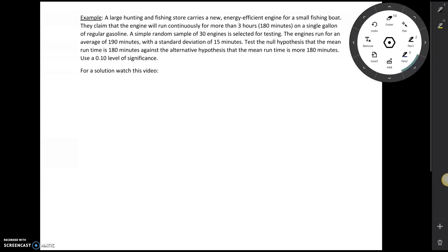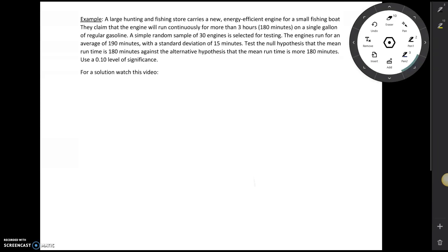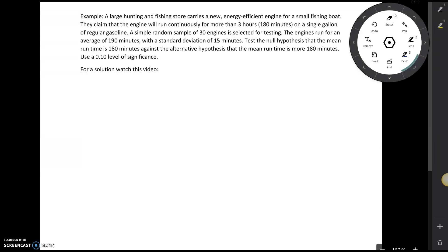Alright, so let's see how we're going to do this. The very first thing we need to do is identify some of the pieces from the problem. It tells us that we selected a simple random sample of 30 engines, so n equals 30. The engines run for an average of 190 minutes with a standard deviation of 15 minutes. So the mean for my sample was 190 and the standard deviation for my sample is equal to 15 minutes.